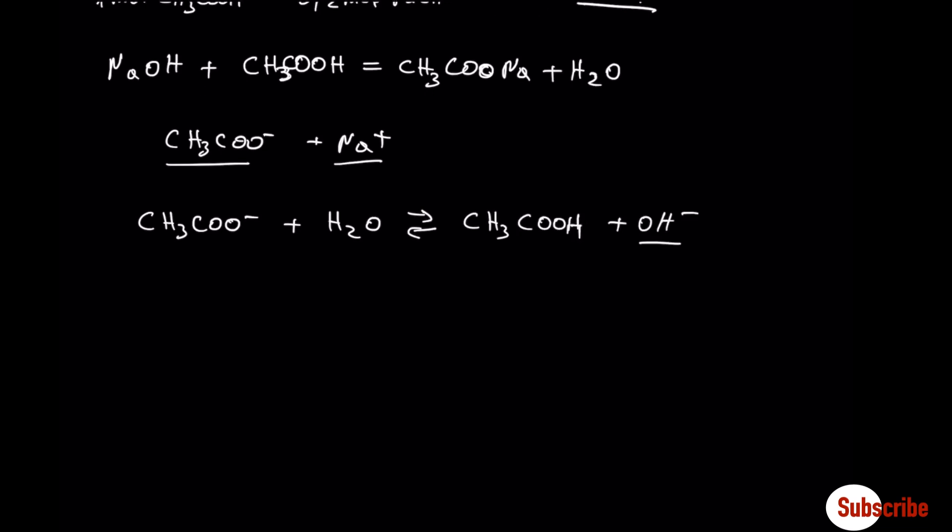From this equation we see that in the solution we have OH minus. This means that the pH is expected to be higher than 7. It's going to be basic.